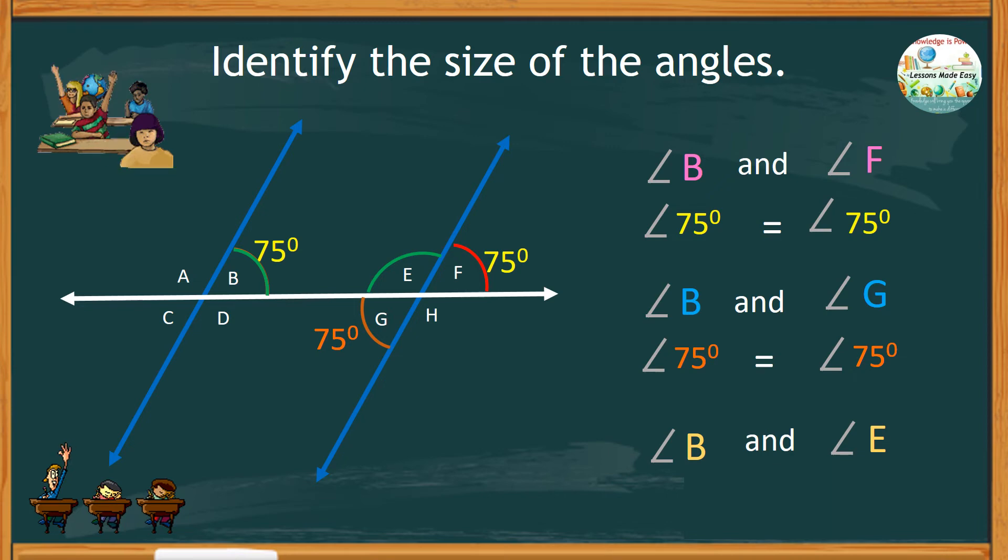They are not equal, but together, they add up to 180 degrees. So if one angle is 75, which is angle B, then therefore, angle E must be 105 degrees.